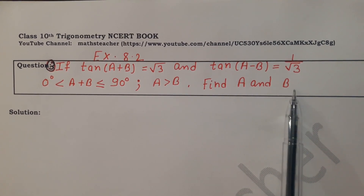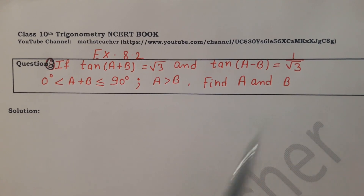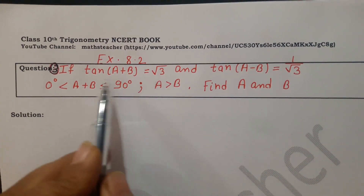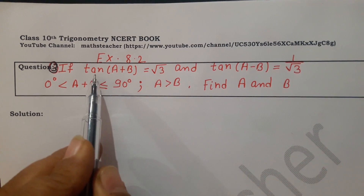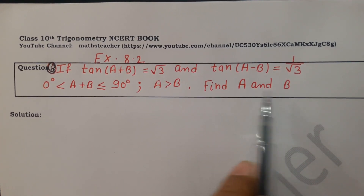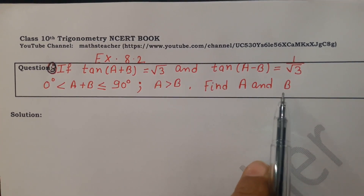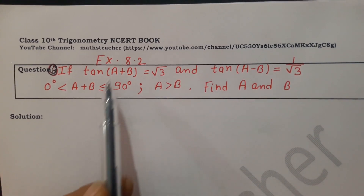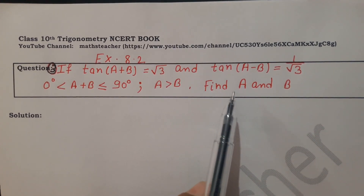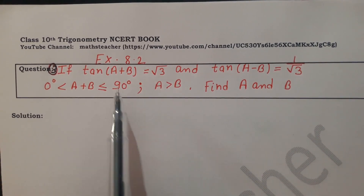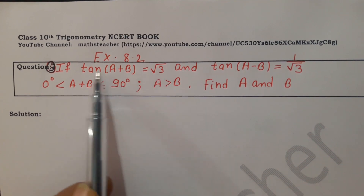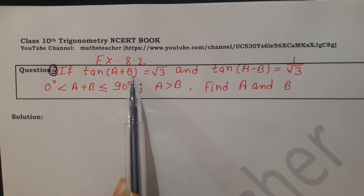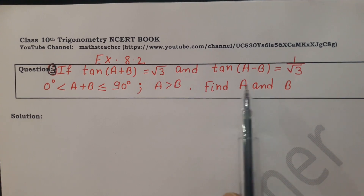Now let's start the question. The hint given is that since there are two variables, we need two equations to find them. We will make two equations: one will be the A+B equation and the other will be the A-B equation.